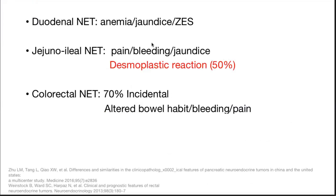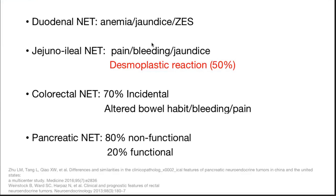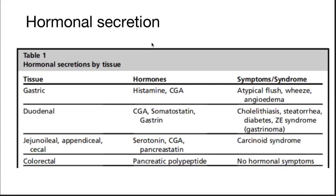The most common presentation of jejuno-ileal neuroendocrine tumors is desmoplastic reaction, present in 50% of cases. The primary tumor is usually smaller, and surrounding fibrotic reaction due to serotonin leads to desmoplastic reaction, which may present as intestinal obstruction. Pancreatic tumors: 80% are non-functional and 20% functional.